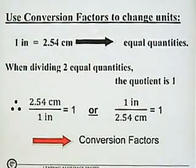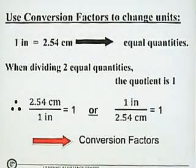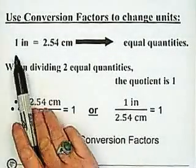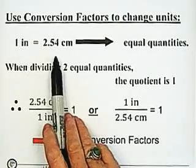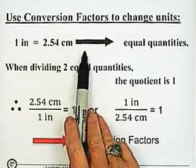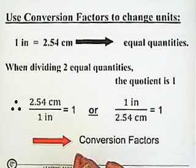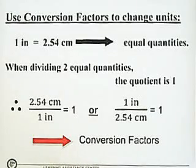Now, we use conversion factors to change units. We know, for example, that one inch equals 2.54 centimeters. These are equal quantities. And when we're dividing two equal quantities, the quotient is 1.